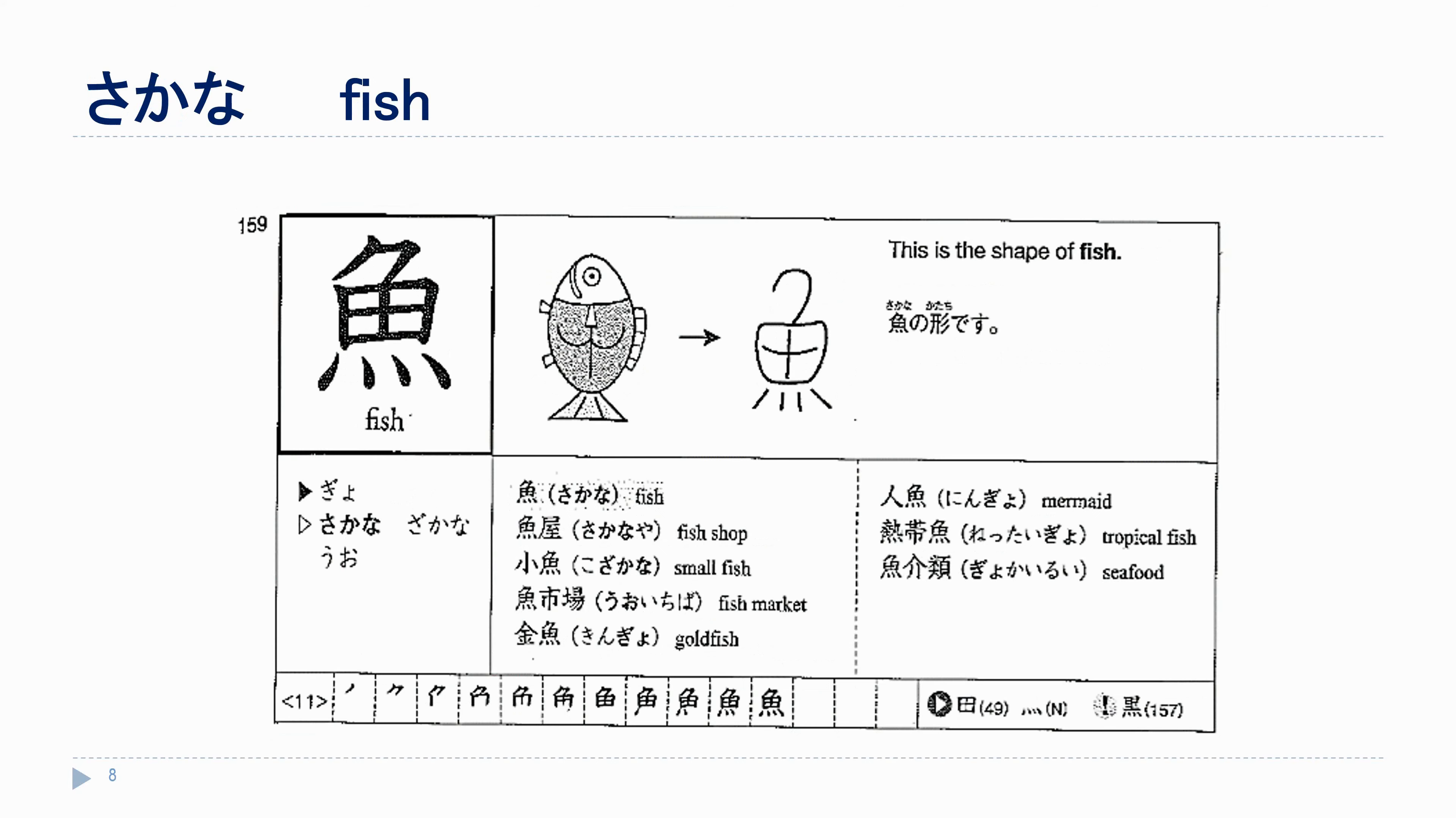Our last two kanji for this chapter are names of animals. We start with さかな. When you look at this kanji, you might be able to see how it sort of resembles a fish, with the bottom part as the tail fins.